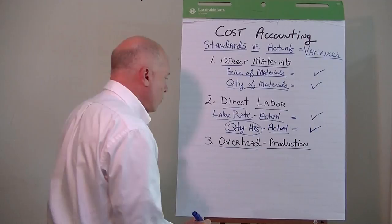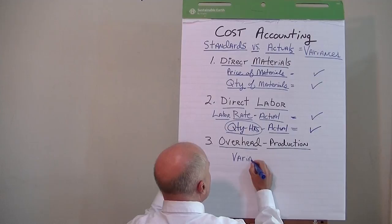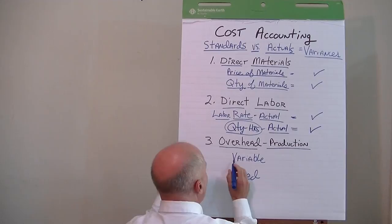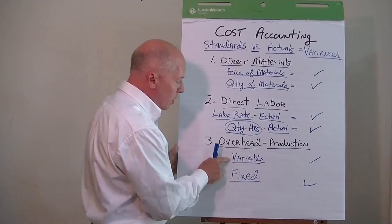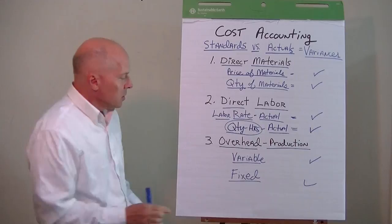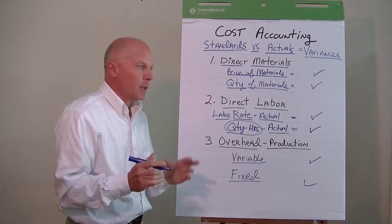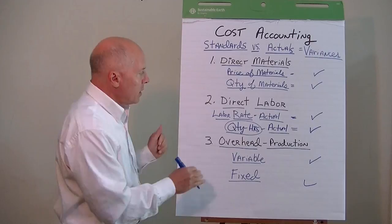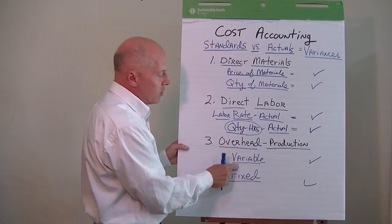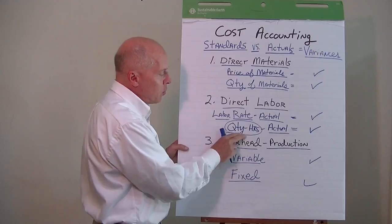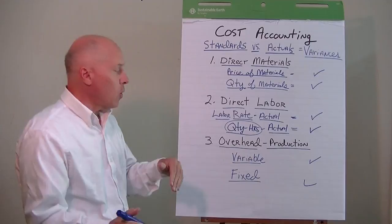We can divide overhead between variable overhead and fixed overhead, and we'll have some standard rates for each. That will help drive comparisons to what we call budgeted overhead, and we'll come up with variances for these two. Variable overhead means it changes with the level of production. For example, if we are manufacturing something and we have quality inspectors — those inspectors are not directly making the product, but we need them to ensure quality before we ship. As we produce more, we may need to hire more quality inspectors; as we produce less, we may not need as many. That's variable overhead.